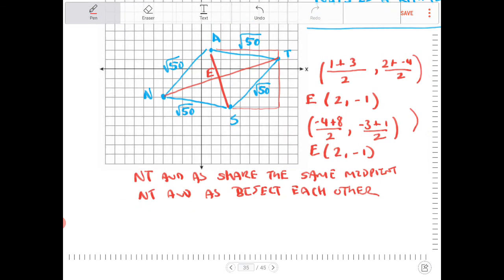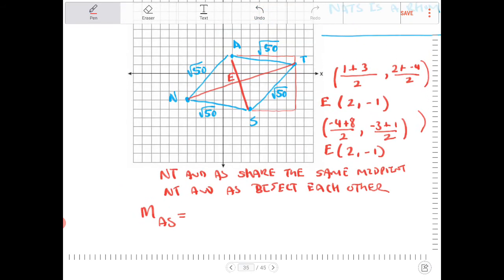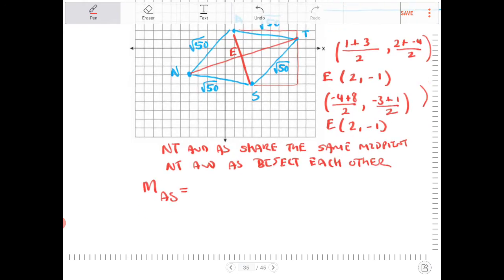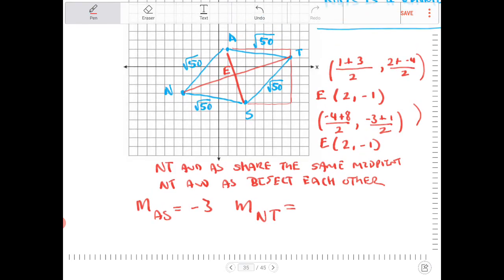And the last thing that we're going to do is we're going to find the slope of A-S. The slope of A-S is, looking at this, is going to be negative 3. The slope of N-T is, looking at this, it's going to be 1 third.